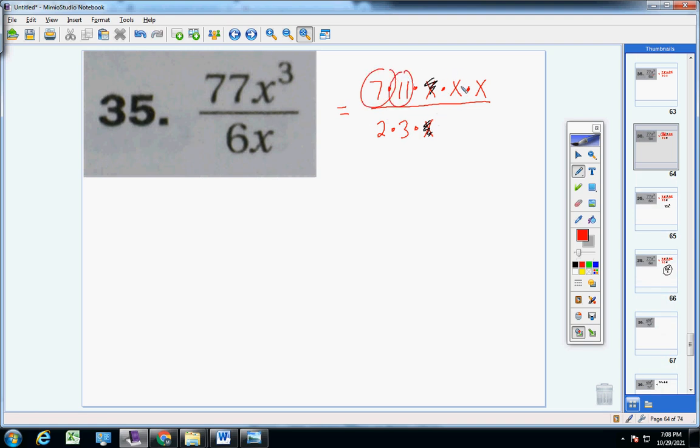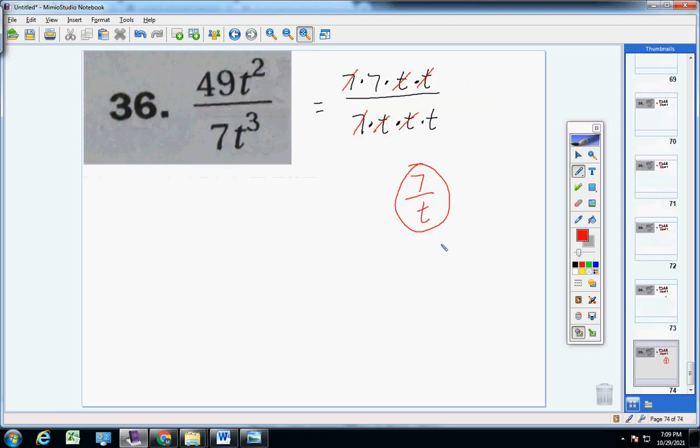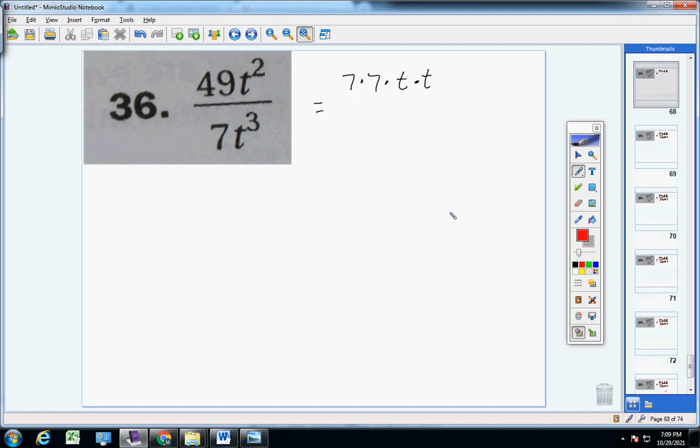So up top you're left with seven times 11, 77X squared. Down the denominator you're left with six. And this thing's jumping around a lot, I apologize.